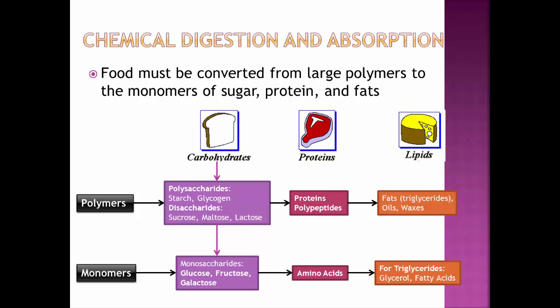Proteins come in as either proteins or polypeptides — the only difference is the length of the string of amino acids. Proteins are typically longer than polypeptides, but they're all broken down into their monomer or building block called amino acids. Lipids are going to come in as either fats, oils, or waxes, and the fats in particular are going to be digested down into glycerol and fatty acids.